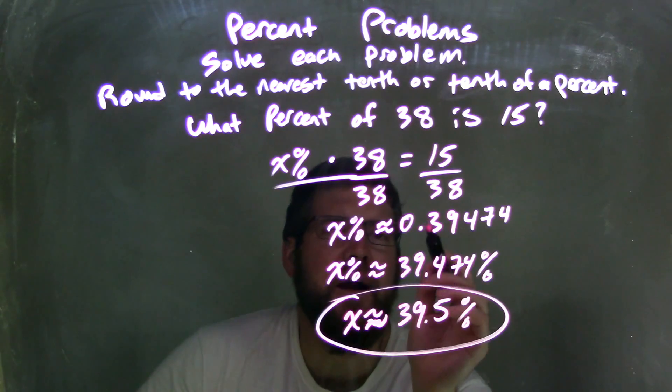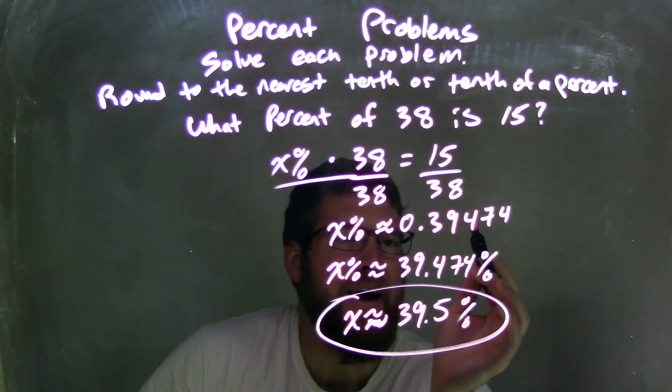From there, I needed to, I then multiply it by 100 to get to a percent. So I got 39.474%. And really, I had to move the decimal place two points over.